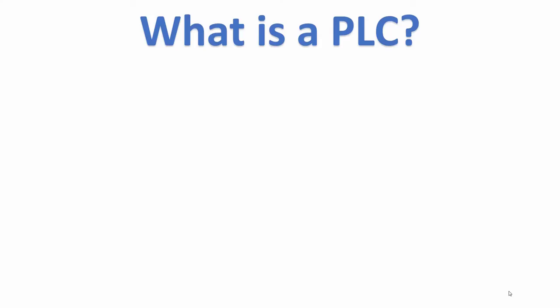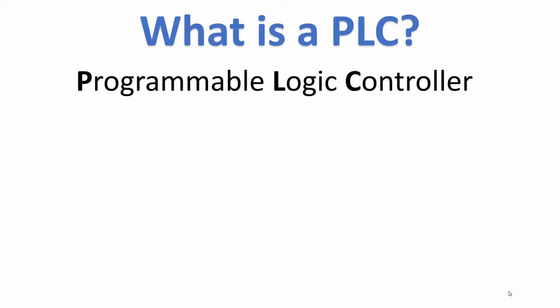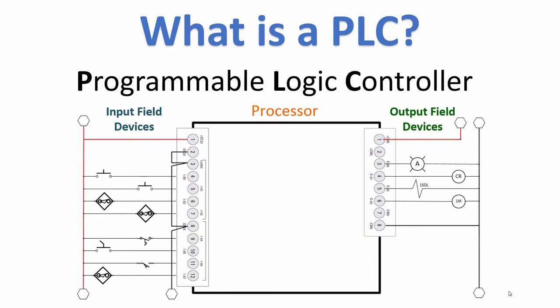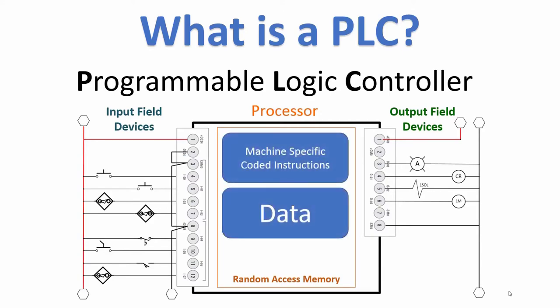What is a PLC? We're going to give everyone the benefit of the doubt here. A PLC is a programmable logic controller. Basically, a PLC is a device that will process the state of input field devices against a set of instructions provided by the designer to operate output field devices. In the processor you have RAM, machine-specific coded instructions, and data. These must be written and downloaded into the RAM of the processor.